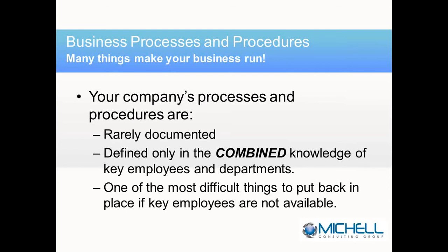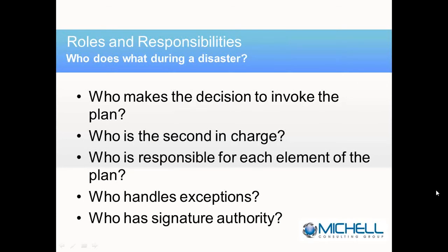Who does what in your organization? And if it's a disaster, what happens with the chain of command? Do you have a second in charge? Who's going to make the decision to invoke the plan? Who has signature authority? If there's a big natural disaster and there's only one person with signature authority in your organization, that may not be such a good idea. So you want to consider the chain of command and how you can keep the business running in the event some key employees aren't available.